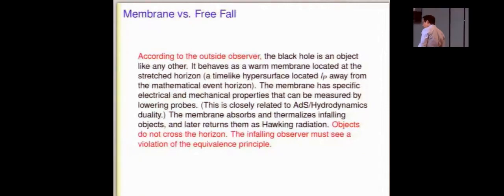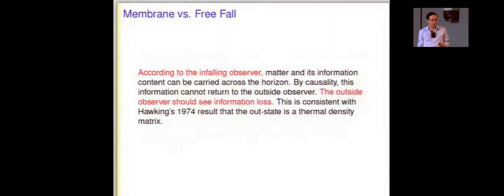From his point of view, something special does happen to all the people who fall towards the horizon. They hit that membrane that he can investigate all sorts of physical properties of. They get thermalized by it and they eventually get returned to the outside as Hawking radiation. To him, it seems clear that an infalling observer should see a violation of the equivalence principle, but he just can't check himself. He doesn't want to fall in. He wants to be the outside observer. Otherwise, he has an identity problem.